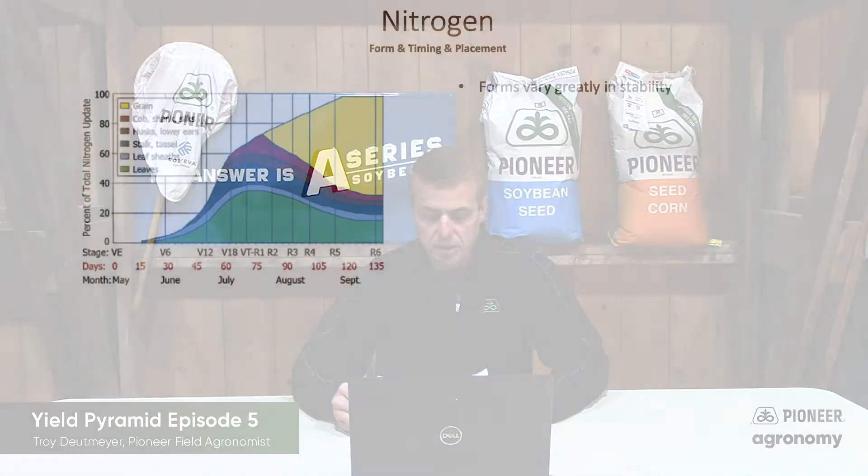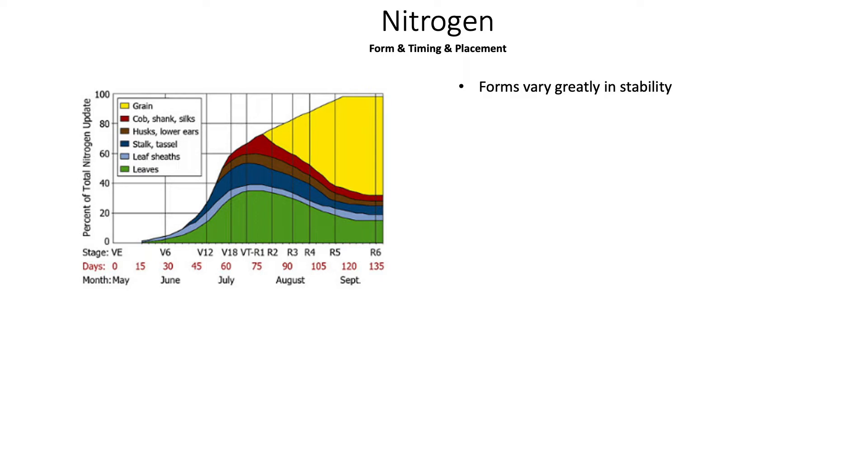Modern hybrids are still using approximately a third of their nitrogen from pollination through the end of grain fill. We need to ensure adequate nitrogen supply toward the end of the growing season. The answer is not simply to apply more nitrogen — it comes down to the timing and forms we're using, as well as the use of stabilizers to help ensure we have adequate late-season nitrogen availability.